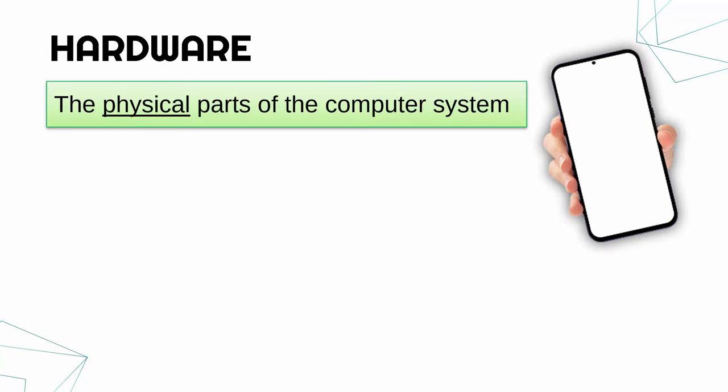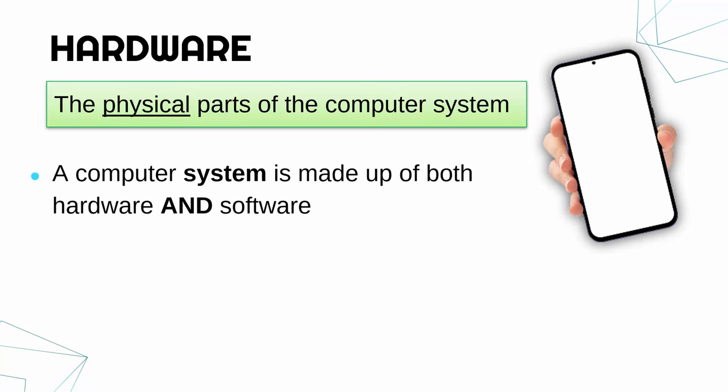So for example, the actual phone itself — what the phone is made of is the phone's hardware. The phone is a computer and so therefore the physical parts are the hardware. The computer itself, the computer system, to use a more formal phrase, is made up of both hardware and software.